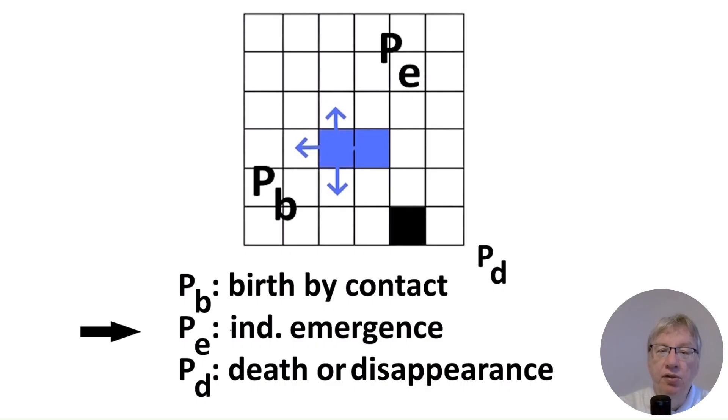A second process corresponds to the independent emergence of the same motif in a different part of the world. For instance, a motif may appear whenever the conditions are right. The probability of the process is PE and the blue square on the right illustrates this.